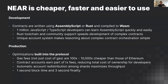NEAR has this unique account system that makes it easy to reason about how contracts interact. In production there are optimizations built into the protocol — gas fees are 100 to 10,000 times cheaper than Ethereum. Contract accounts earn 30% of fees, and the network will automatically redistribute accounts across shards to keep things balanced. Mainnet today has only one shard, but the plan is to add several more before the end of the year.